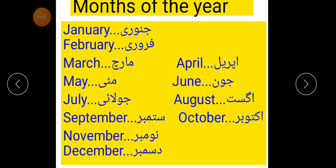M-A-Y May. J-U-N-E June. J-U-L-Y July. A-U-G-U-S-T August. S-E-P-T-E-M-B-E-R September. O-C-T-O-B-E-R October. N-O-V-E-M-B-E-R November.